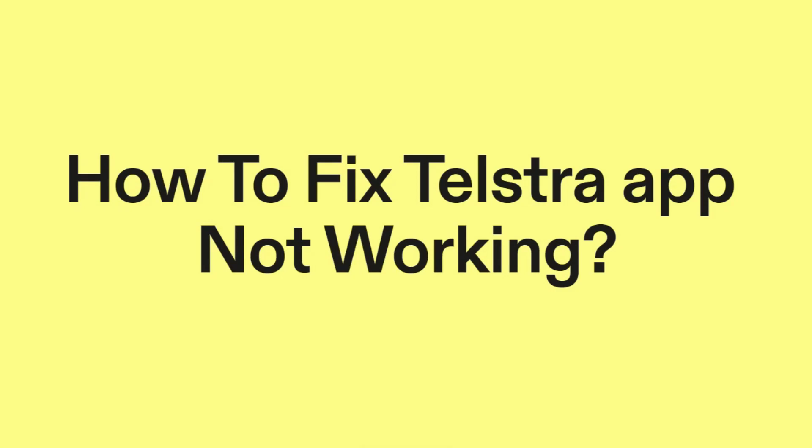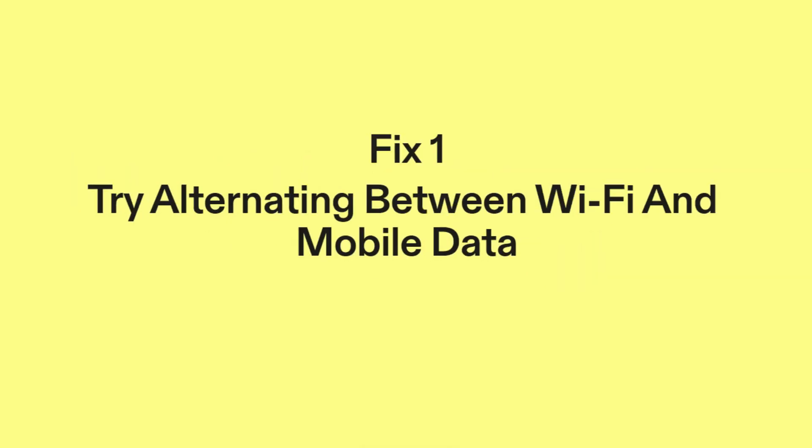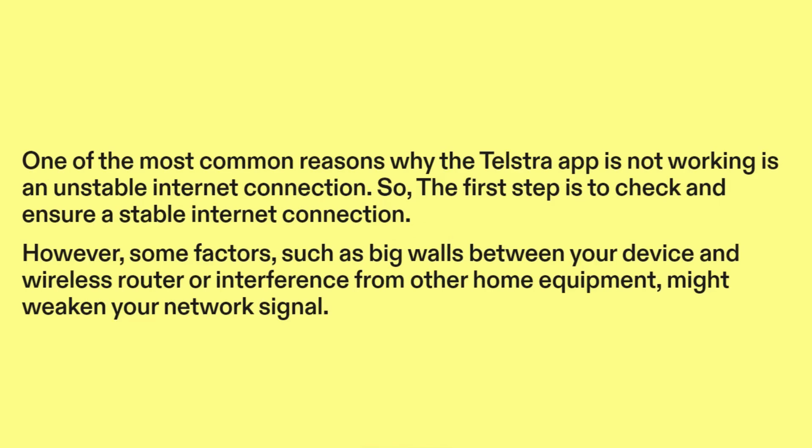How to fix Telstra app not working. Fix 1: Try alternating between Wi-Fi and mobile data. One of the most common reasons why the Telstra app is not working is an unstable internet connection. So the first step is to check and ensure a stable internet connection.